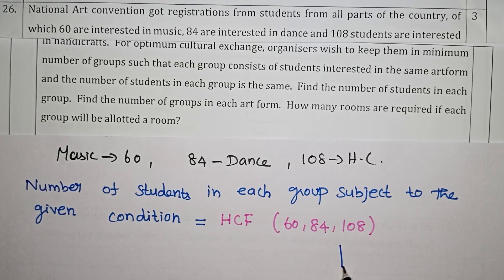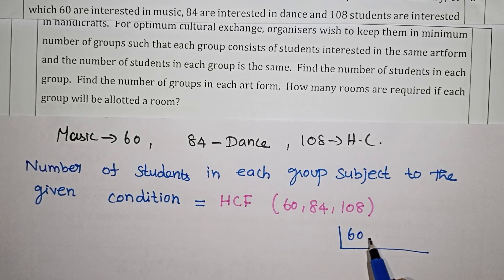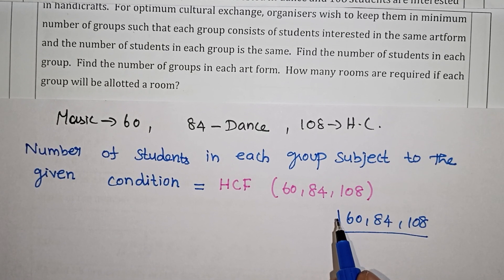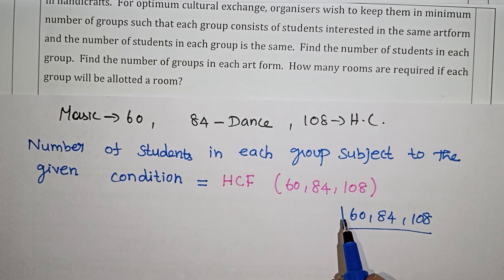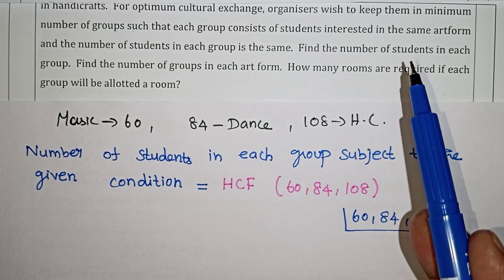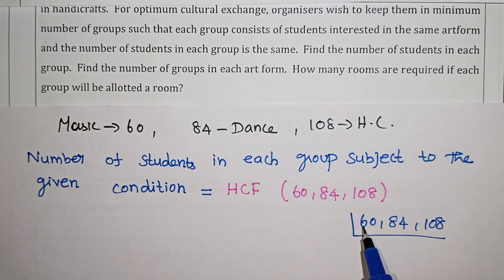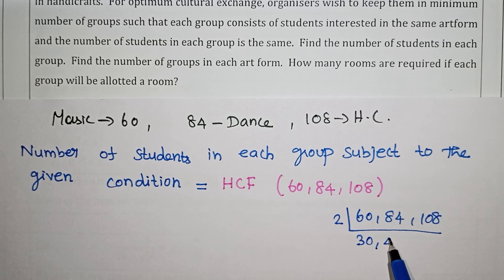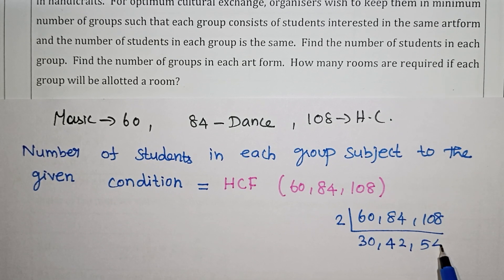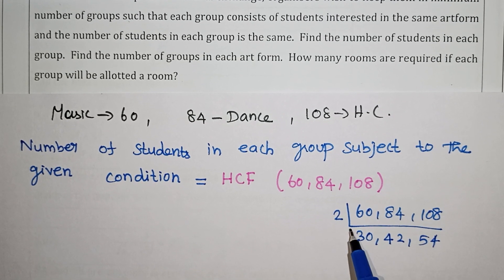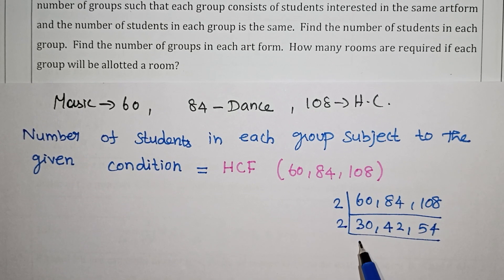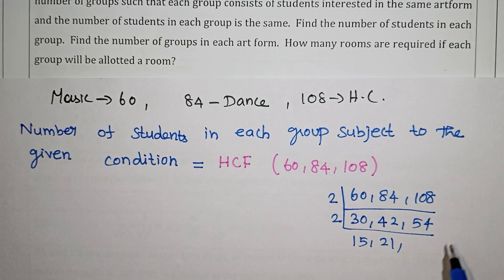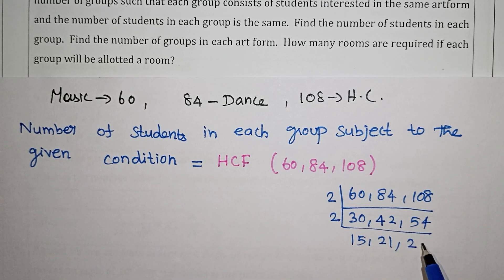Using the division method: divide 60, 84, and 108 each by 2 — we get 30, 42, and 54. Divide again by 2 — we get 15, 21, and 27. Divide by 3 — we get 5, 7, and 9.